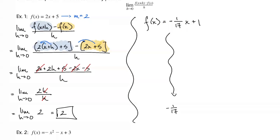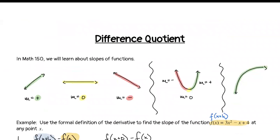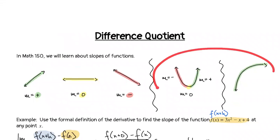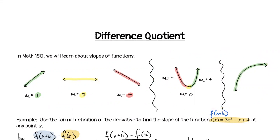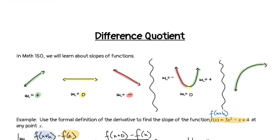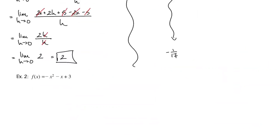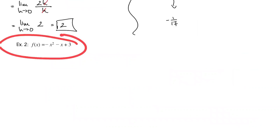Where it gets a little trickier is with nonlinear functions — functions that change their slope. When we described the parabola's slope, it was negative, then zero, then positive. Or with the natural log function, slopes were positive but all different depending on where you were. That's why we're going to focus mostly on quadratic functions to really get this technique down.